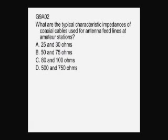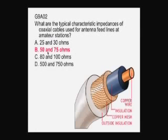What are the typical characteristic impedances of coaxial cables used for antenna feed lines at amateur stations? Most amateur stations use 50 and 75 ohm coaxial cables.